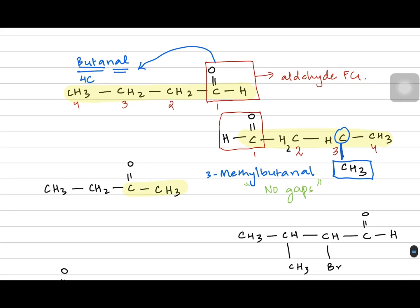In the third example, the carbonyl is not at the corner — it's in the middle. So it's a ketone, not an aldehyde. You number it so that the ketone gets a smaller number. From the right side it is more appropriate so the carbonyl carbon becomes number two; otherwise from the left it would become number three. To name a ketone, the name ends with the suffix 'ONE' (O-N-E). So here the name would be butan-2-one. Without the number it sounds like butanone, but you must state the position: butan-2-one.